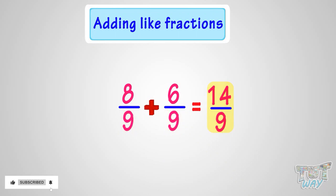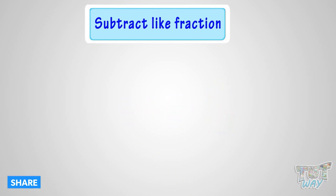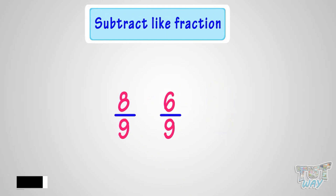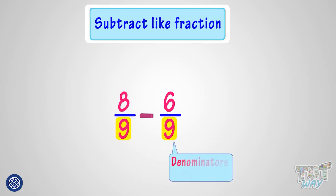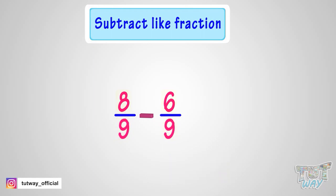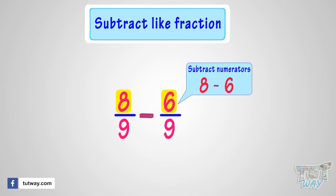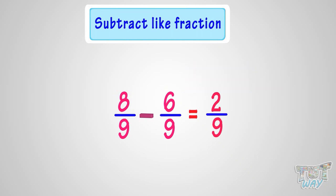Now let's see how we subtract like fractions. Here we have an example. We have to subtract 6/9 from 8/9. These are like fractions, as both denominators are 9. We just have to subtract the numerators to subtract the fractions. Subtracting the numerators, that is subtracting 6 from 8, we get 2. So 2/9 is the difference between the two fractions 8/9 and 6/9.